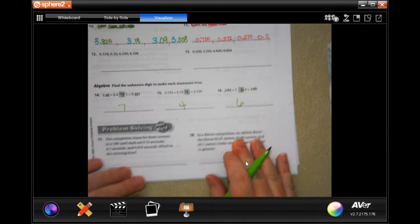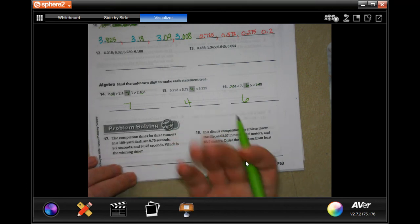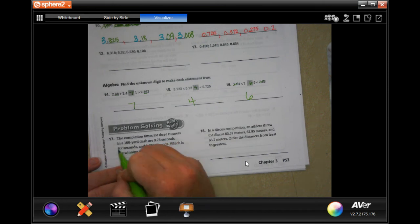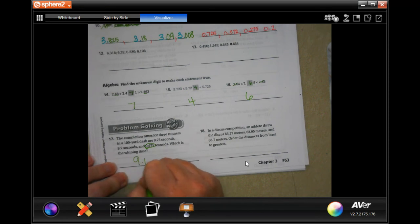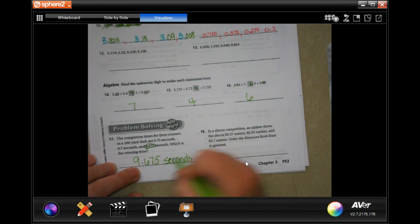Number 17. The completion times for 3 runners in a 100-yard dash are 9.75, 9.7, and 9.675 seconds, which is the winning time. So, you want the fastest time, which is going to be the smallest time. So, 9.7, 7.6. That's the one you want. And we're going to put that in seconds.